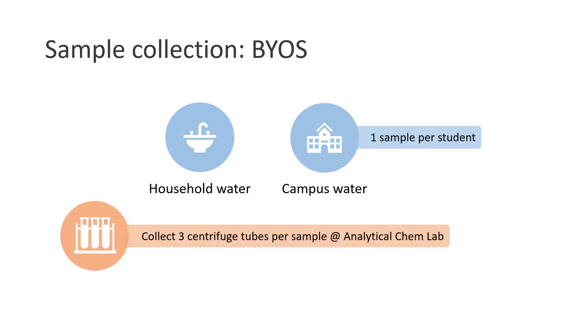Each student may collect three centrifuge tubes for the sample collection from the lab offices. Try collecting the sample fresh on the lab day itself. If you plan to collect household water, you may collect the centrifuge tube during the previous lab session.